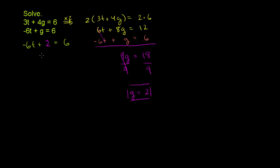And we can subtract 2 from both sides of this equation. Subtracting 2 on the left-hand side of the equation, that cancels out. You have negative 6t is equal to 6 minus 2 is 4.